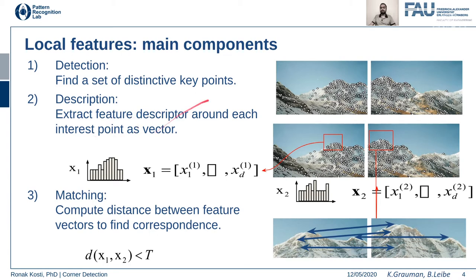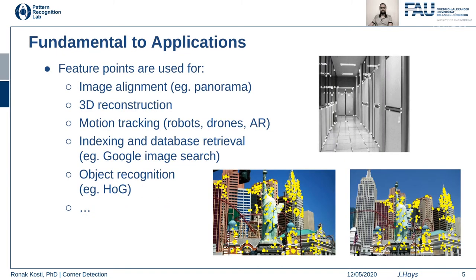Once you detect the features, you need to represent them in either a matrix or vector form in your algorithm. Then at the end, you match those features across images to find different correspondences.